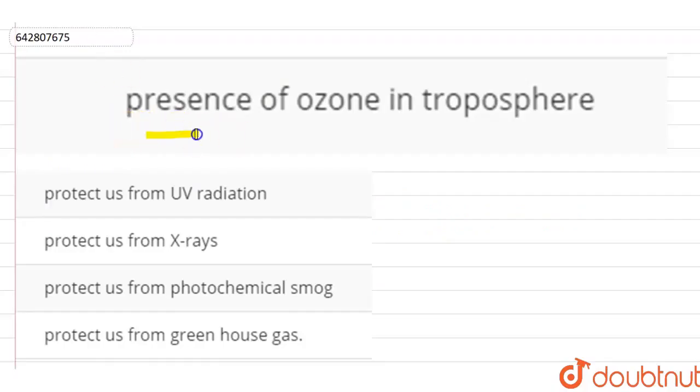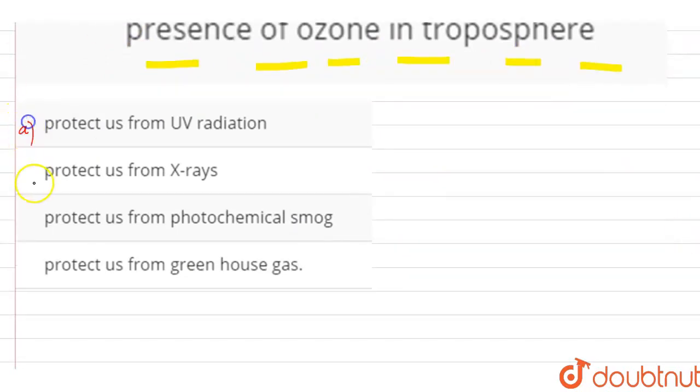Hello everyone, the question is: what is the presence of ozone in the troposphere? Four options are given. Protect us from UV radiation, protect us from X-rays, protect us from photochemical smog, protect us from greenhouse gas.